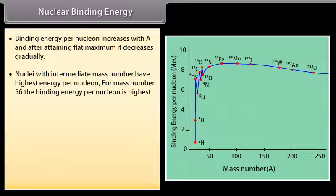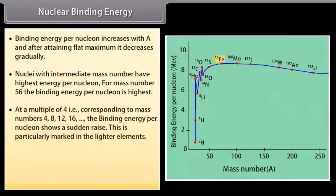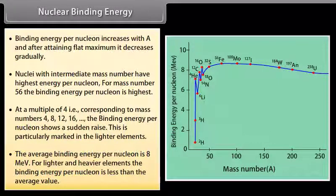Nuclei with intermediate mass number have highest energy per nucleon. For mass number 56, the binding energy per nucleon is highest. At a multiple of 4, that is corresponding to mass numbers 4, 8, 12, and 16, the binding energy per nucleon shows a sudden raise. This is particularly marked in the lighter elements. The average binding energy per nucleon is 8 MeV. For lighter and heavier elements, the binding energy per nucleon is less than the average value.